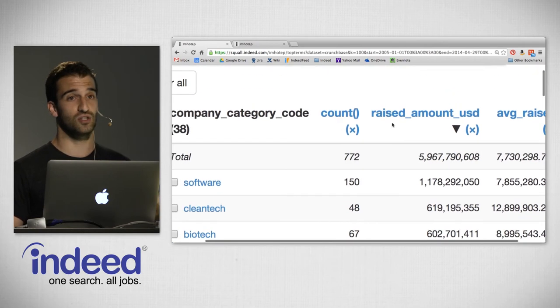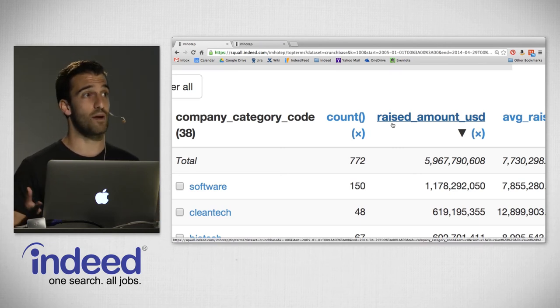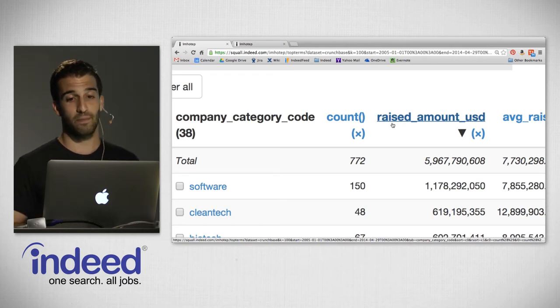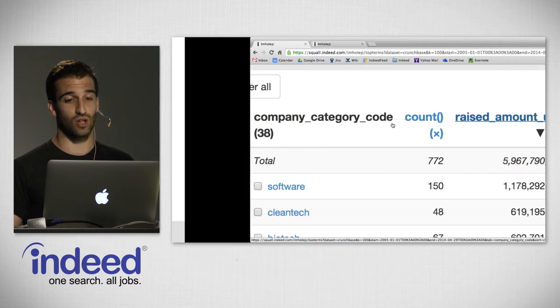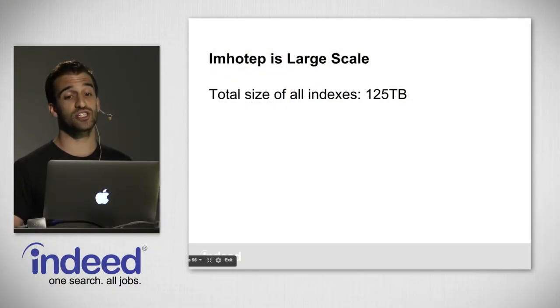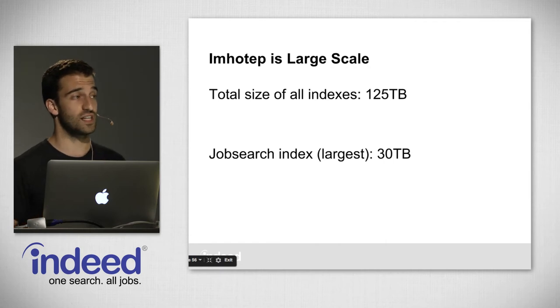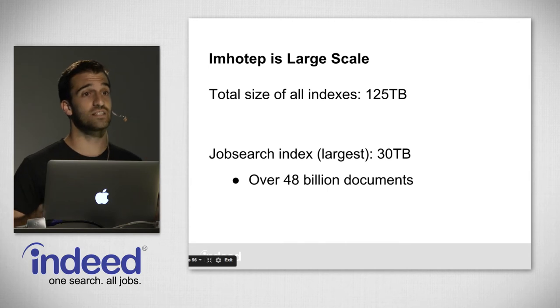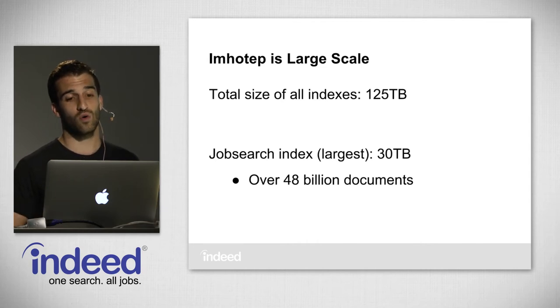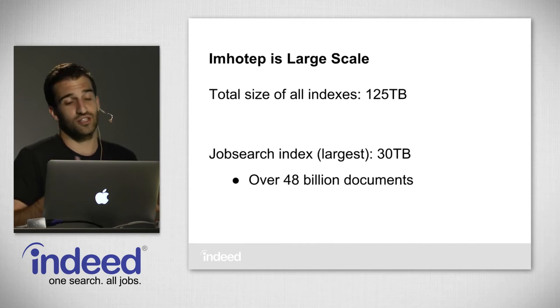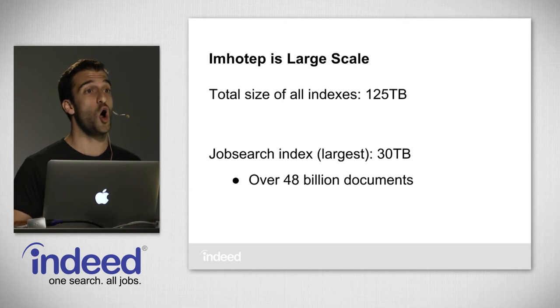We knew nothing about this dataset when I uploaded it, and now we can explore and learn a lot more about it interactively. But this dataset is just 48,000 documents — that's pretty small in terms of Imhotep, which is at its core a large-scale interactive analytics tool. The total size of the data we have Imhotep living on top of is 125 terabytes. The largest index is our job search index at 30 terabytes, over 48 billion documents — a million times the size of the dataset we were just dealing with. We looked into commercial data warehousing solutions and they ranged to the tune of 20 million dollars. So I'd like to reiterate that we are open sourcing Imhotep.